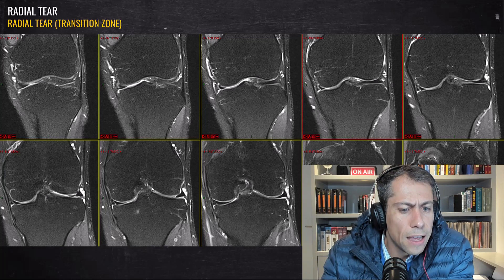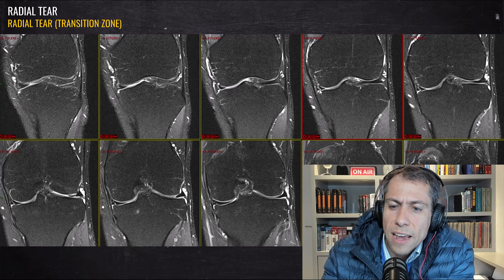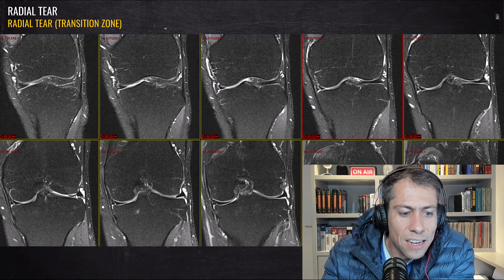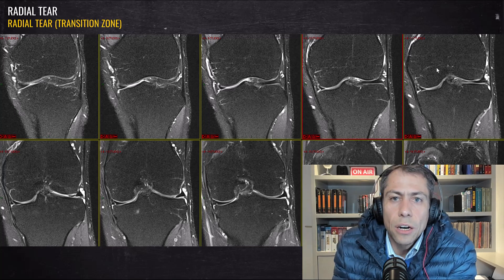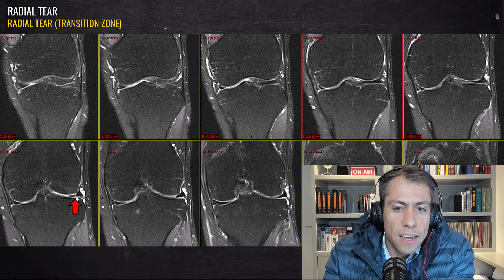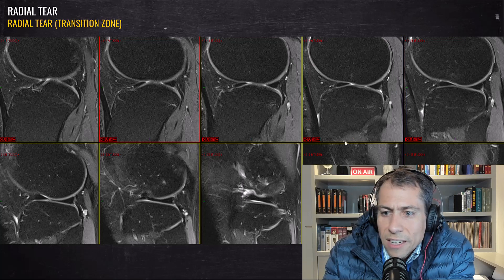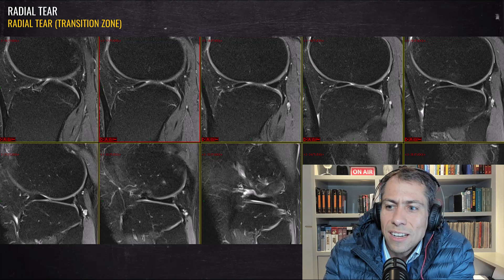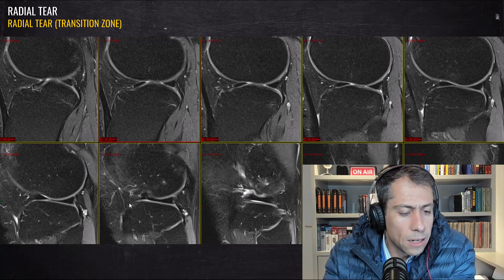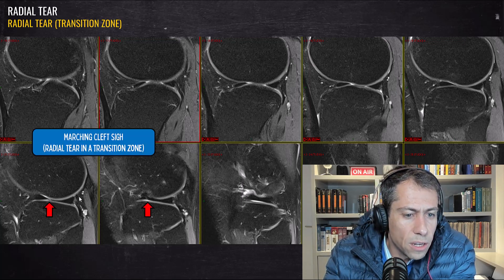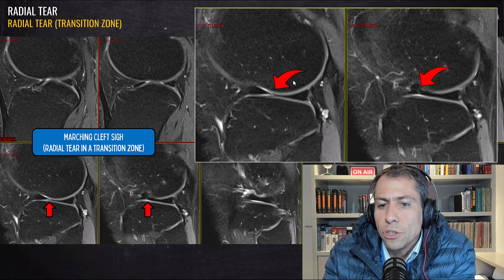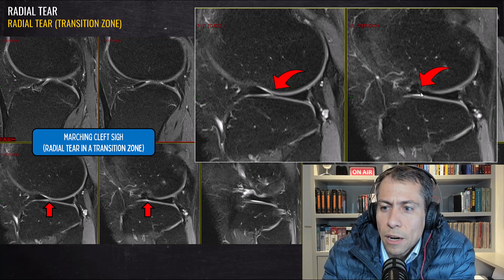Let me show you another case. This patient had a knee trauma with rupture of the anterior cruciate ligament. There is also a longitudinal vertical tear in the medial meniscus. But here in the lateral meniscus, we can see a tear between the meniscal body and the anterior horn, in the curve between these two regions. Here is the tear. When you go to the sagittal plane, we can see a small irregularity here and here — this is the marching cleft sign of a radial tear in the transition zone between the anterior horn and the meniscal body.